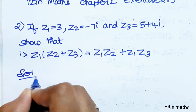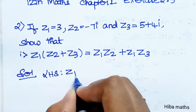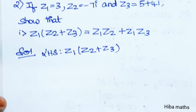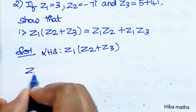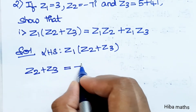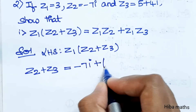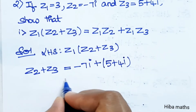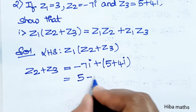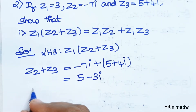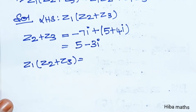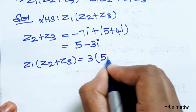Solution: first, LHS part. z1 into (z2 plus z3). First, add z2 and z3, then multiply by z1. Substituting: z2 minus 7i plus z3 which is 5 plus 4i. Real numbers add: 5 plus 4i minus 7i gives 5 minus 3i. Now z1 into (z2 plus z3), z1 value is 3, so 3 into (5 minus 3i).